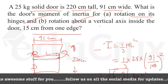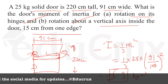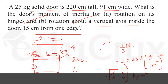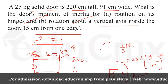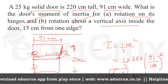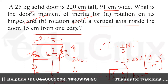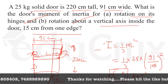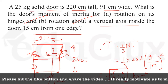Now for Part B: rotation about a vertical axis inside the door 15 cm from one edge. So from this edge we move 15 cm. The remaining distance from the axis to the other edge is 91 minus 15 cm.